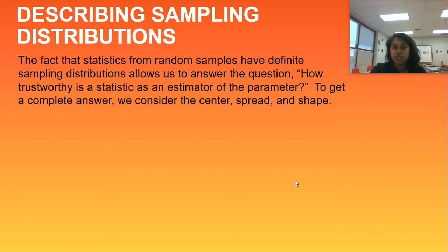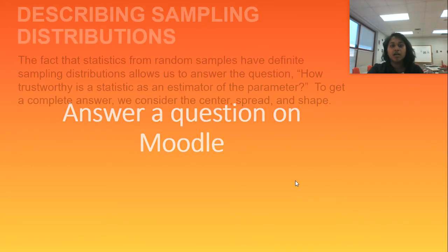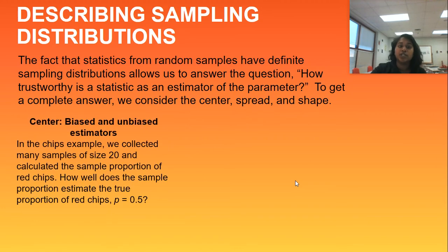Unfortunately, with sampling distributions, we have some uniqueness. Our center is actually going to be described as biased or unbiased estimators.